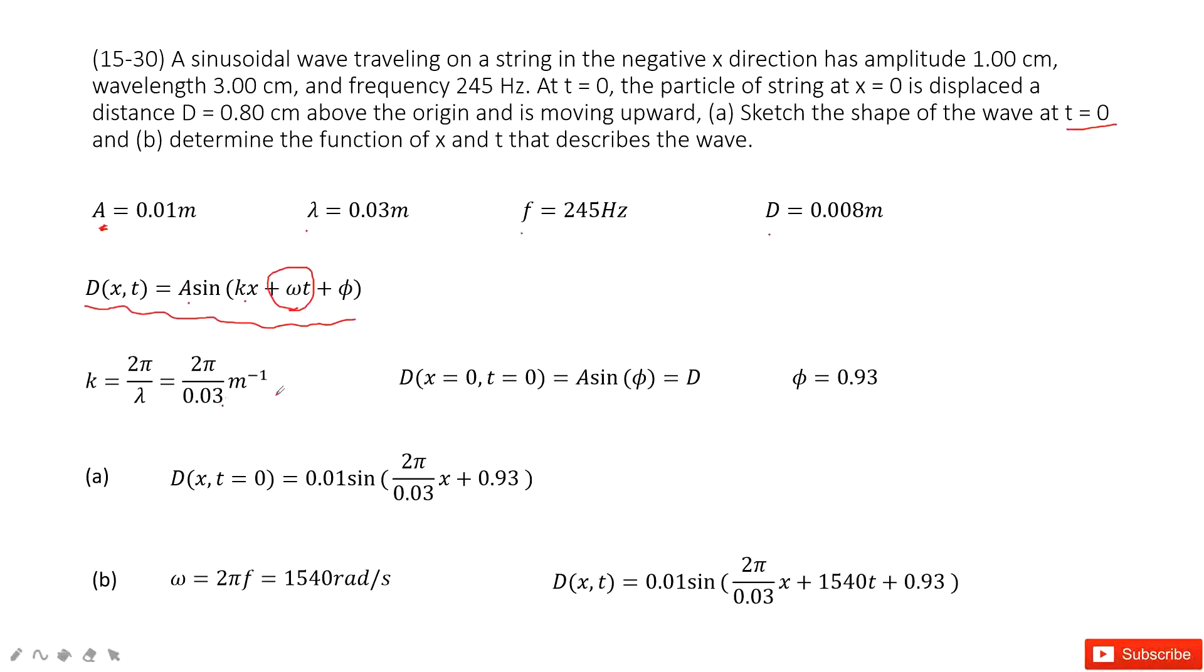The next part we need to find phi. The next quantity given tells us t equal to 0, lambda equal to 0, the distance equal to d, 0.08. So it becomes a sin phi equal to d, because this x is disappeared.